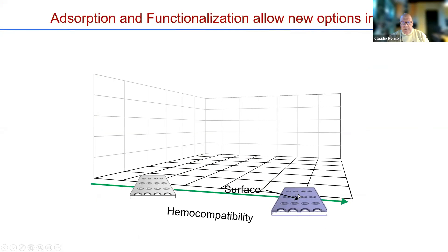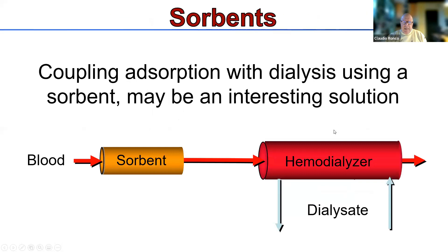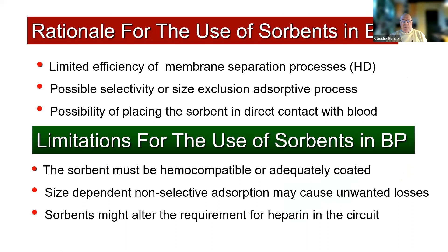Originally we added to the membrane mostly hemocompatibility, modified the surface, then we modified porosity to change flux. And today we modify the surface with bioproperties and the capacity of absorbing. Coupling absorption with dialysis is a good idea. But instead of using the membrane for this purpose — which can be maximally one or two square meters — we can use sorbent devices that may exploit up to 20,000 square meters of possible absorbing surface.